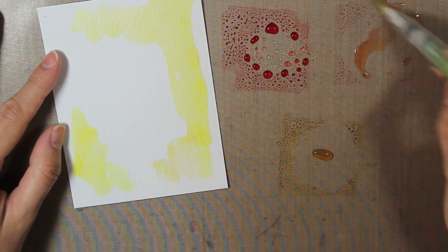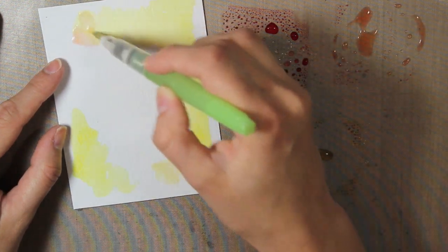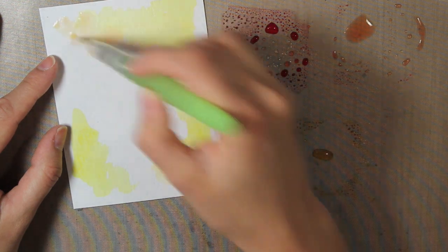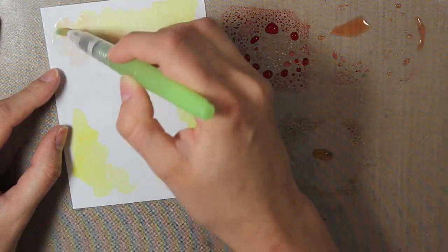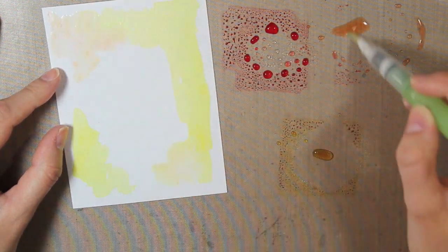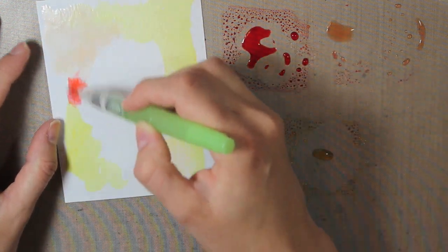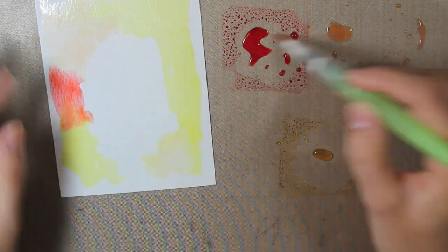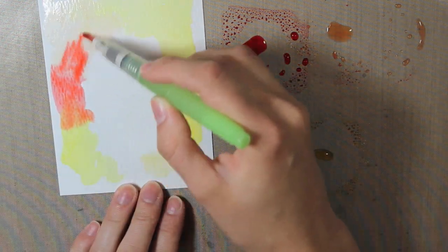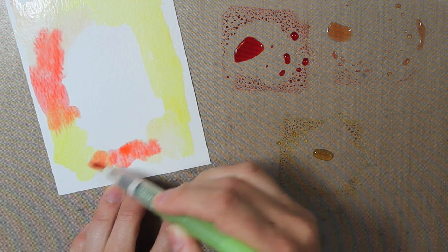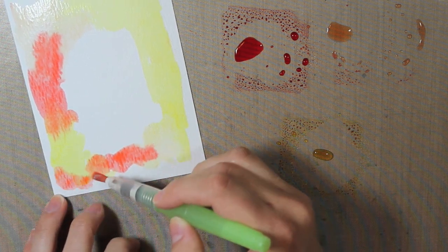So I added the Mustard Seed first, and then I'm just adding a little bit of that Spun Sugar. It's a little bit harder to see that, especially when it's wet, but once it dries, it does show up a little bit better. And I also did add some more to my craft sheet. And then I'm just adding in some of that Abandoned Coral. And when you mix that with the yellow, it turns into an orange color, so those two colors do mix really well together.